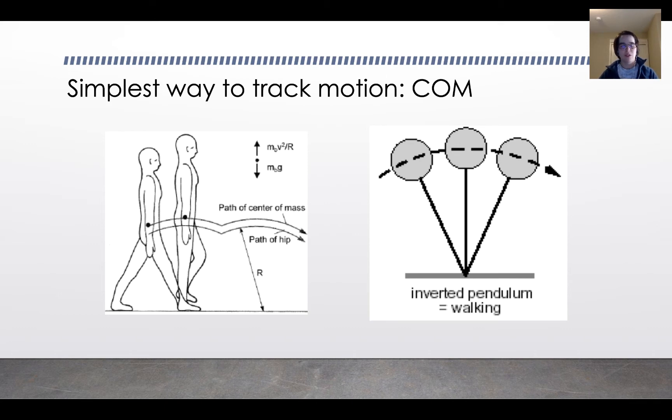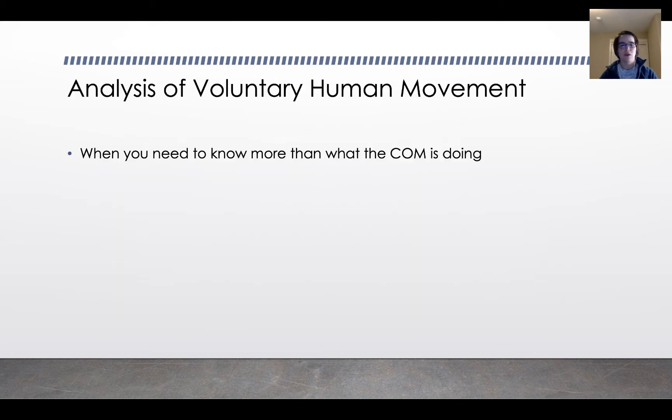That's one really easy way to get some basic information about how the human body is moving. But there are a lot of times, especially if we're starting to think about forces at the ankle or knee or hip, where you need to know more than just what the center of mass is doing. For example, you might want to know the knee angle or the ankle angle or the thigh angle.